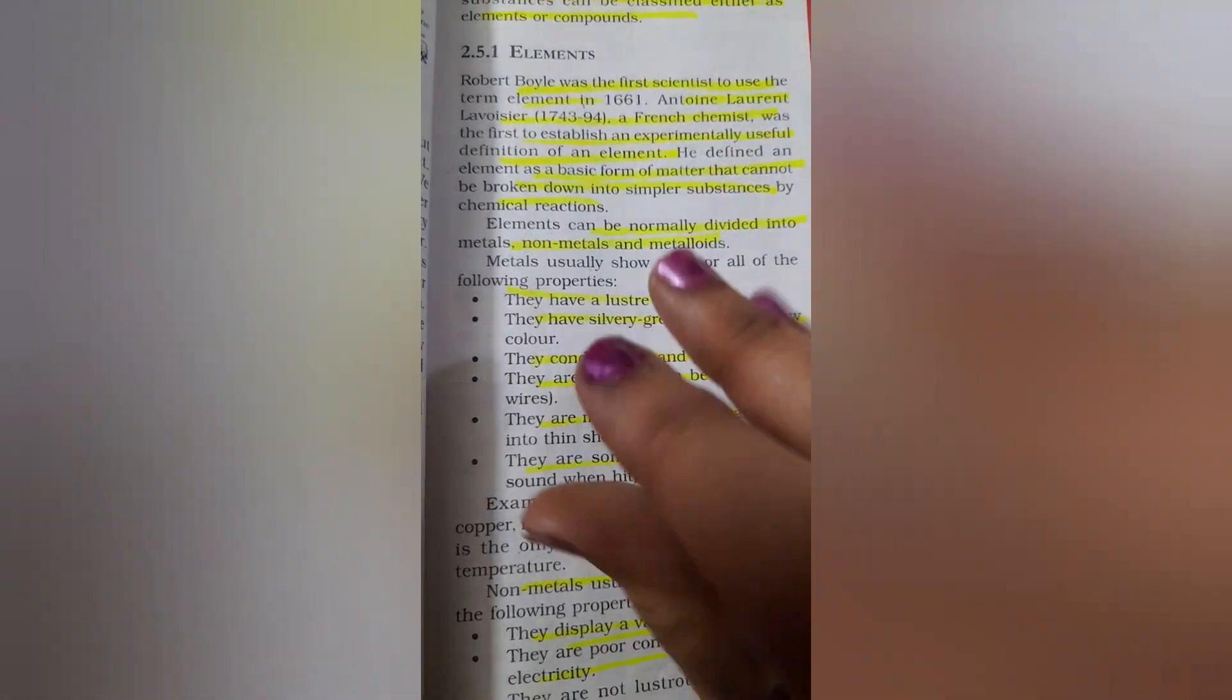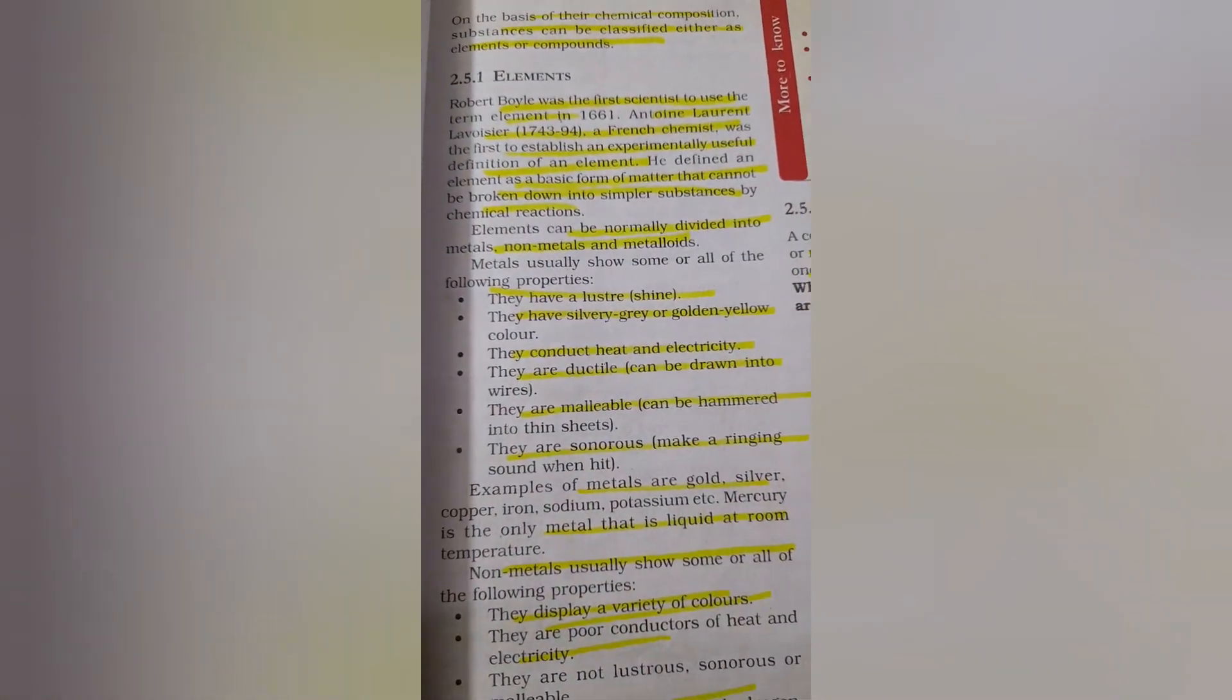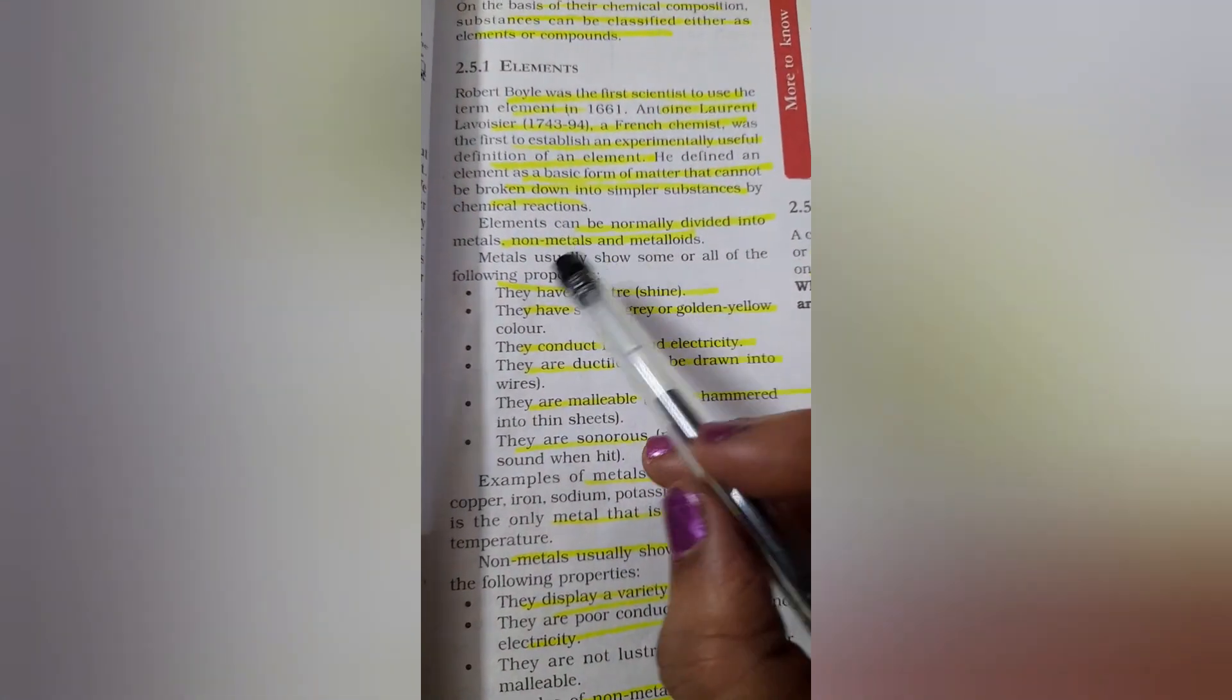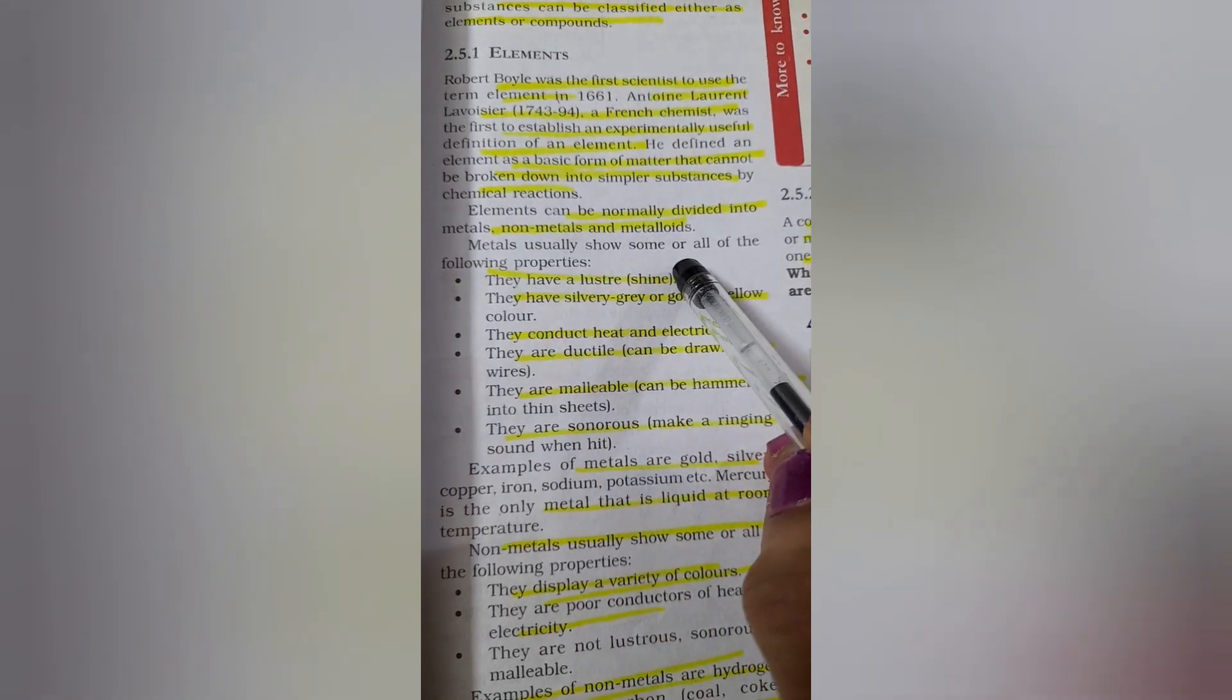It is a basic form of matter. That is the smallest part of a substance which cannot be broken down into simpler substances by chemical reaction. Normally elements are divided into metals, non-metals and metalloids.